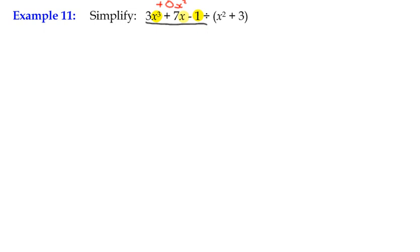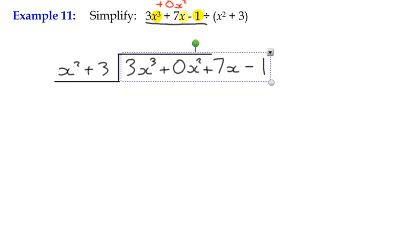Alright, so we're going to write this out as normal. We've got a division step. And underneath it we'll put 3x cubed and we're going to put in plus 0x squared plus 7x minus 1, and we're going to divide by x squared plus 3.